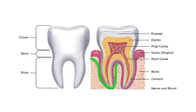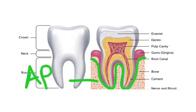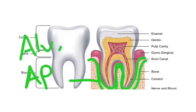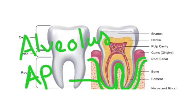The root portion of the tooth is firmly attached in the bony process of the jaw, called the alveolar process. The bone of the tooth socket to which the tooth is firmly attached is called the alveolus. The alveolar process acts as a support to help the tooth maintain its position in the dental arch.